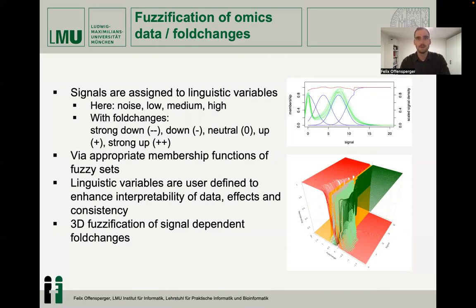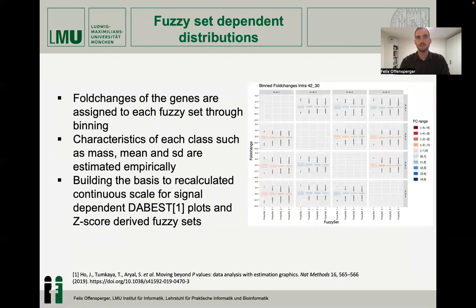In a later step, the FASification is not only based on the signal, but also on the fold change, resulting in 3D FASI membership functions. The fold changes of each feature are assigned to bins representing the FASI sets according to their membership. With these bins, characteristics of the FASI set can be measured, such as the mass, mean, and standard deviation, which are therefore empirical for the data. They build the basis for calculation of the best-fit plots and empirical set scores, which are later the borders for new FASI sets, resulting in statements of differential change seen at the previous slide.